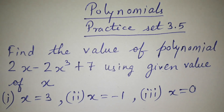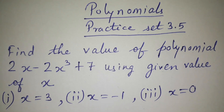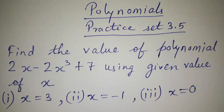Today's topic is from the chapter Polynomials, Practice Set 3.5, Question 1. We need to find the value of the polynomial 2x minus 2x cube plus 7 using given values of x, which are x equals 3, x equals minus 1, and x equals 0.